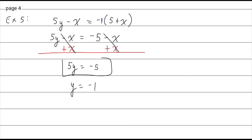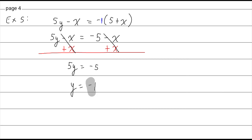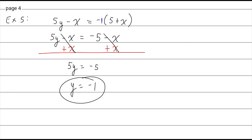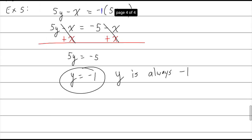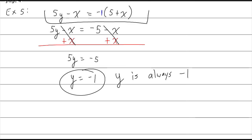By the way, this would be considered standard form since there's no x — you can imagine it as 0x plus 5y equals negative 5. And slope-intercept form would be y equals 0x minus 1, but we just write y equals negative 1. Y equals negative 1 just means y is always negative 1; it doesn't matter what x is. These two equations — the original and the simplified — are the exact same graph. One just looks a lot nicer and is easier to read.